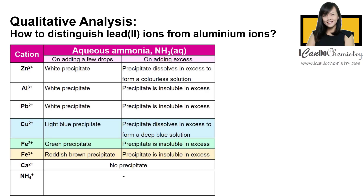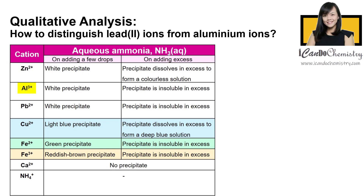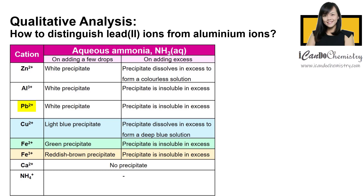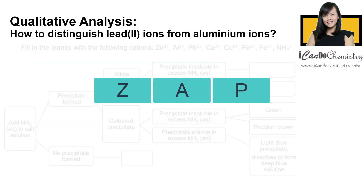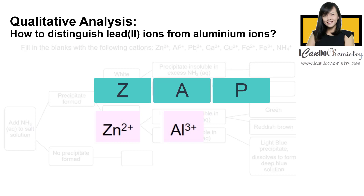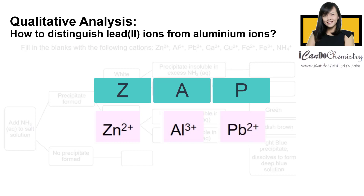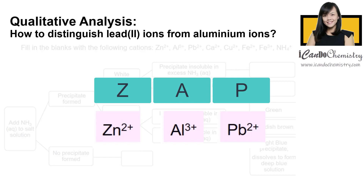The cations that form white precipitate with aqueous ammonia are aluminium, zinc, and lead-2 ions. For easy memory, I will advise students to remember it as Z — zinc, aluminium, and lead-2. So these three ions will form white precipitate with aqueous ammonia.